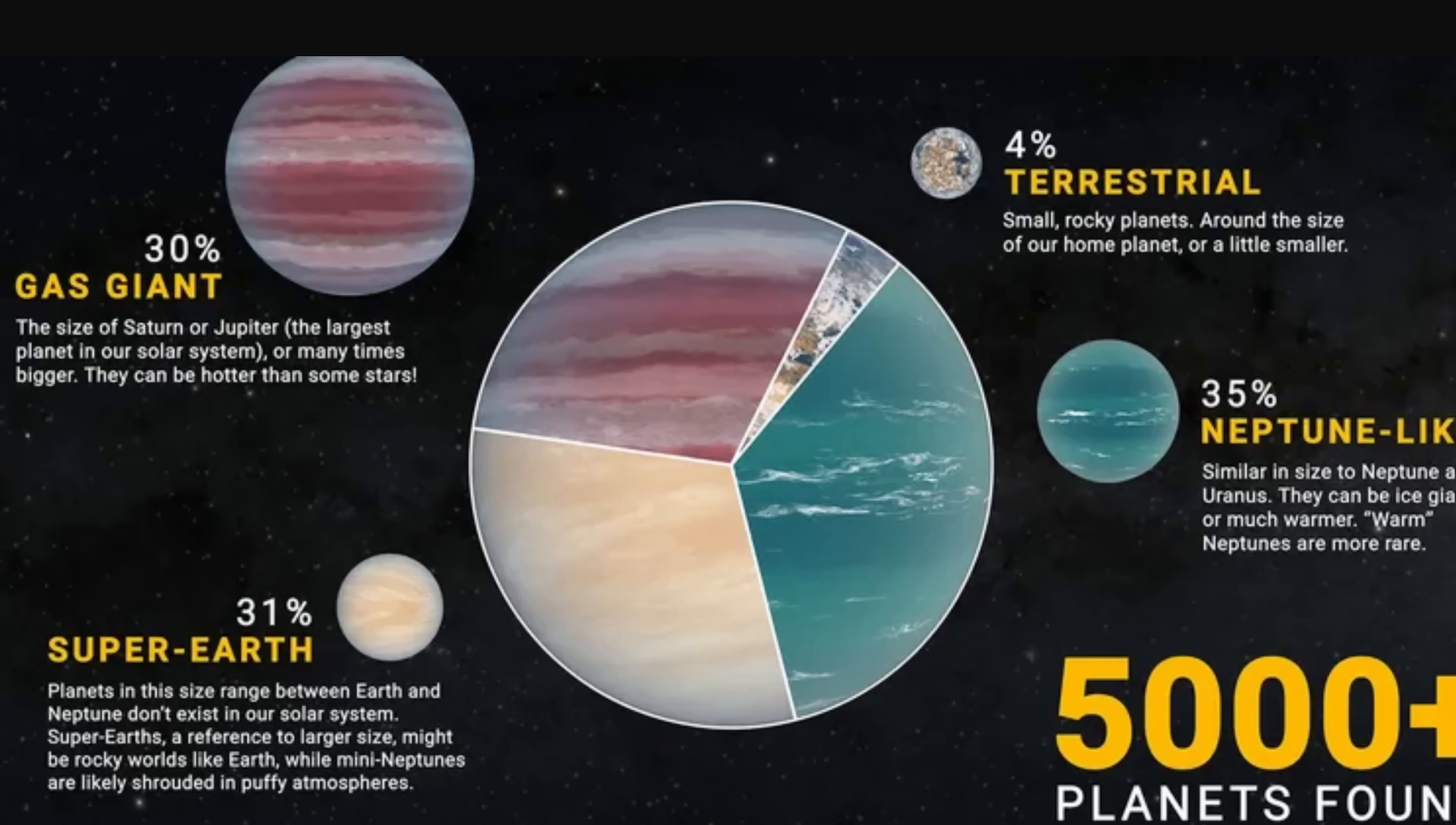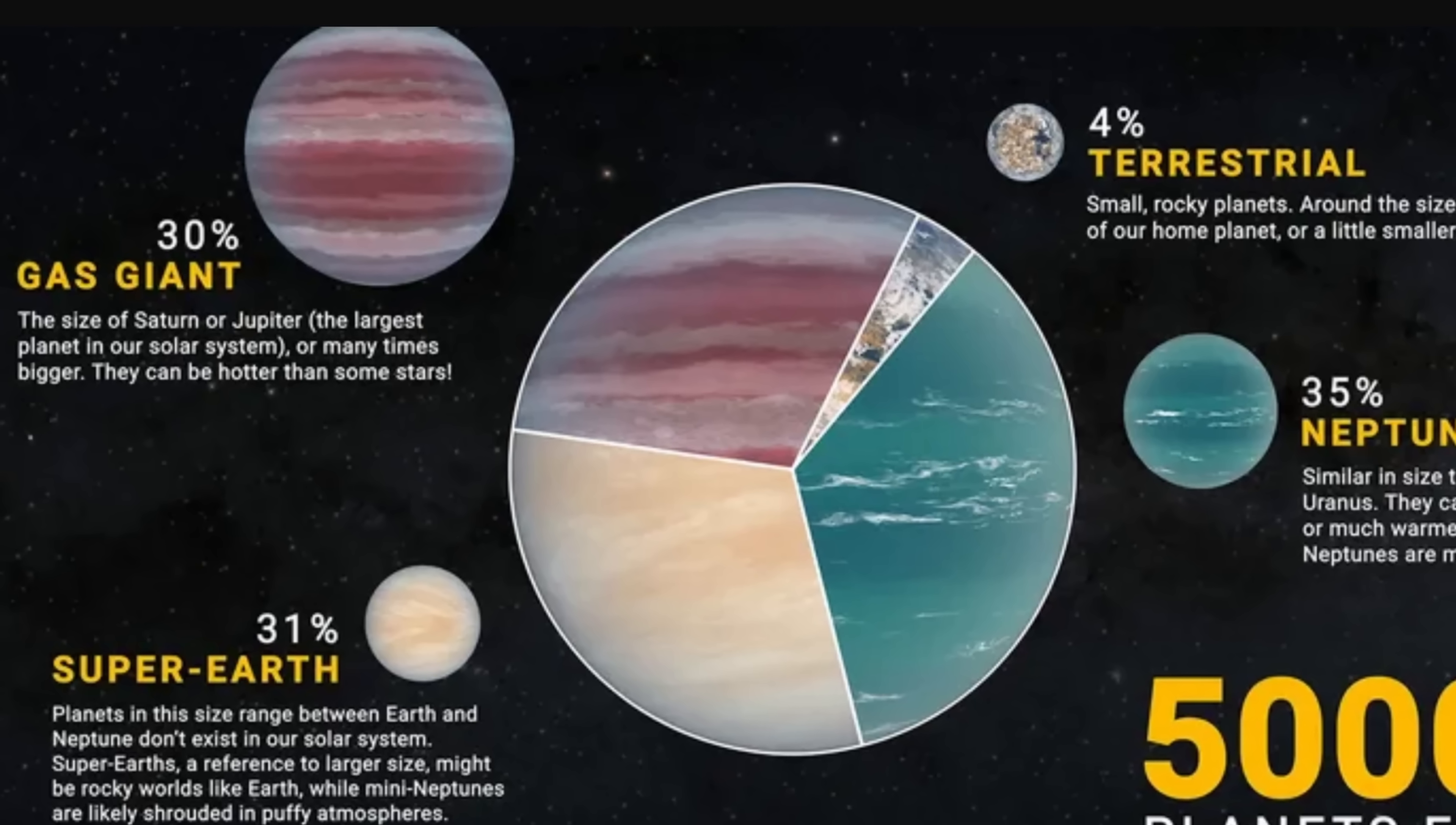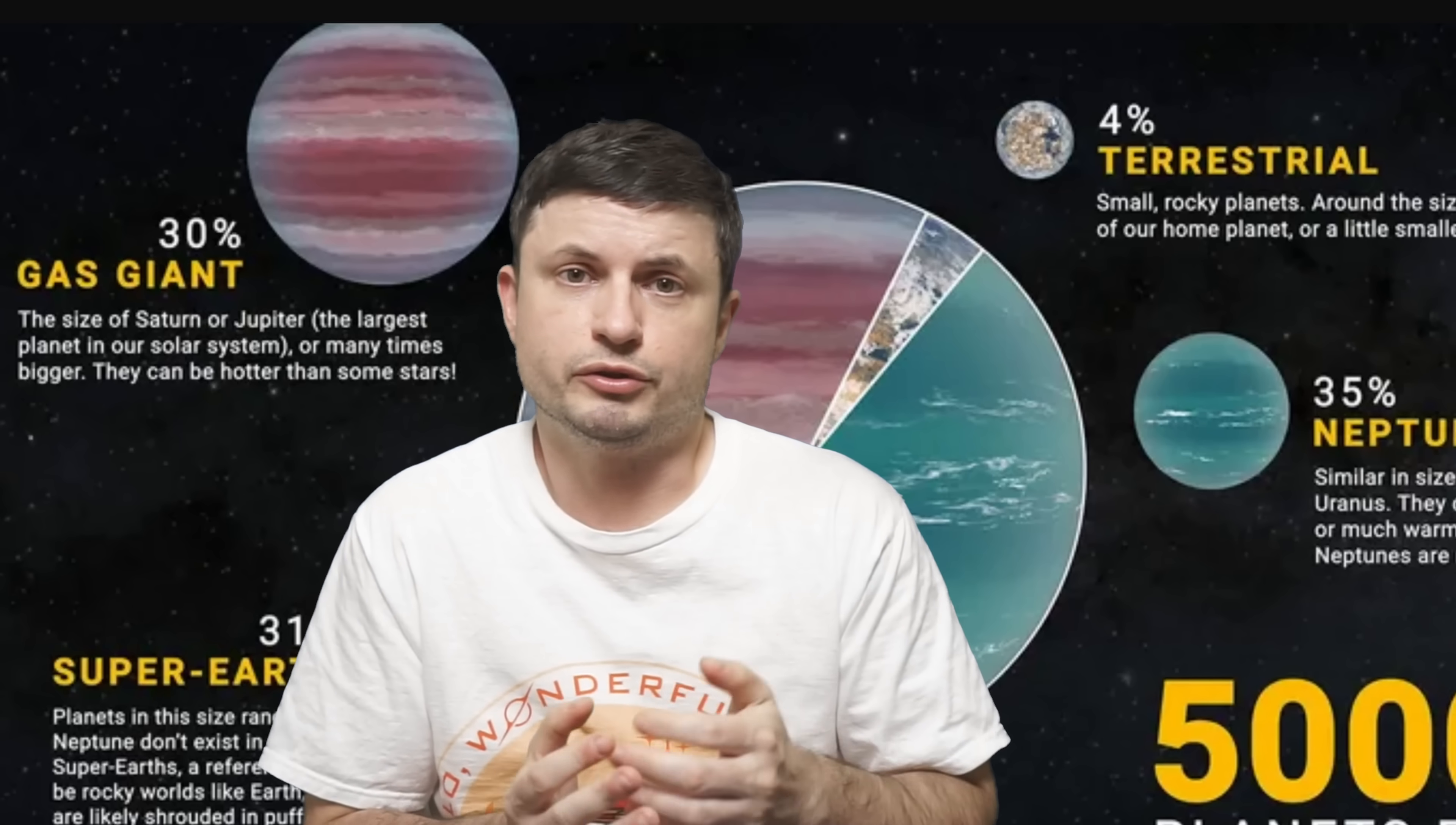The vast majority seem to be either super-Earths or mini-Neptunes, quite a lot of them seem to be Jupiter-like and very often orbit extremely close to the star, and only a very small portion of exoplanets has been discovered to be terrestrial or some kind of a super-Earth.